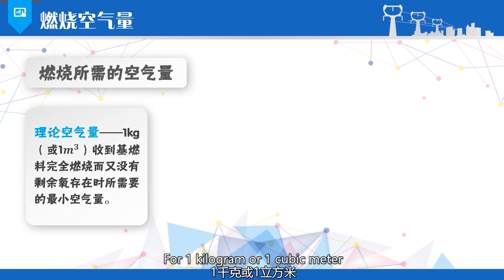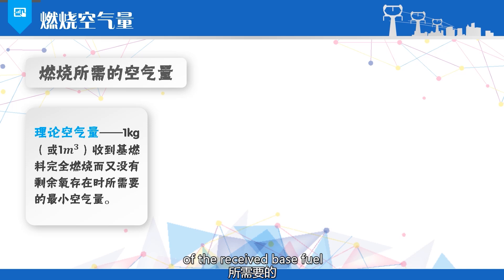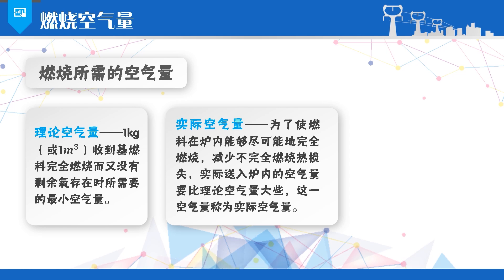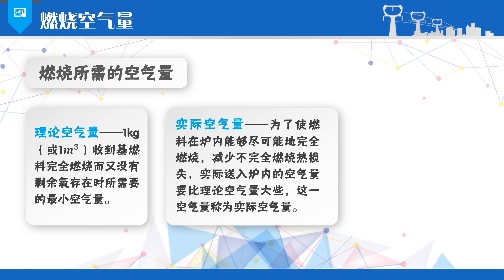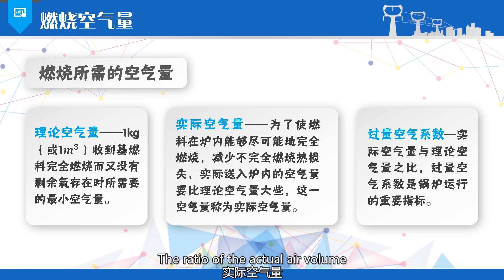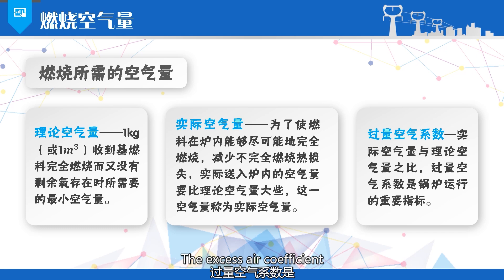The minimum amount of air required for complete combustion of one kilogram or one cubic meter of received-base fuel with no residual oxygen present is called the theoretical air volume. To ensure that the fuel in the furnace can be as completely burned as possible, reducing the heat loss from incomplete combustion, the actual amount of air fed into the furnace should be slightly larger than the theoretical air volume. This air volume is referred to as the actual air volume. The ratio of the actual air volume to the theoretical air volume is called the excess air coefficient.